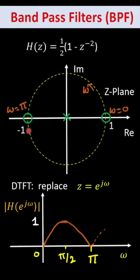If we have one zero at z = -1 and z = +1, then we will get a band-pass filter.